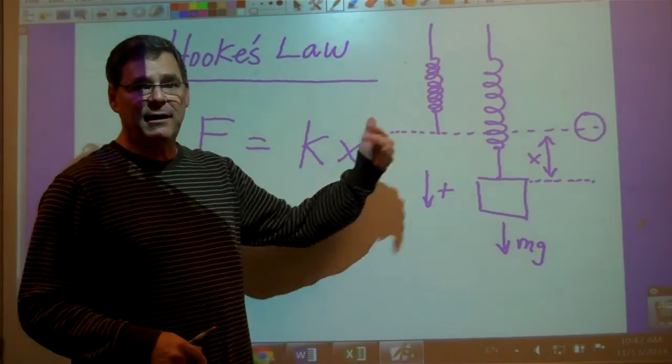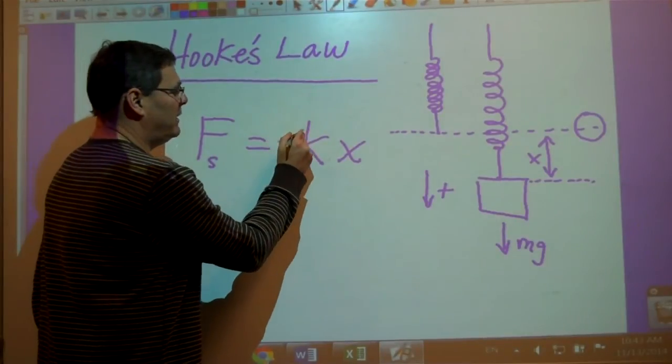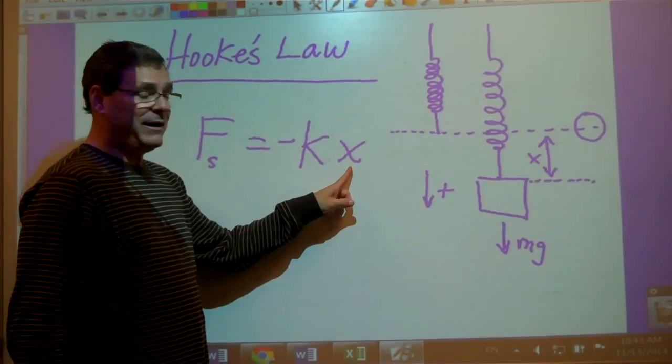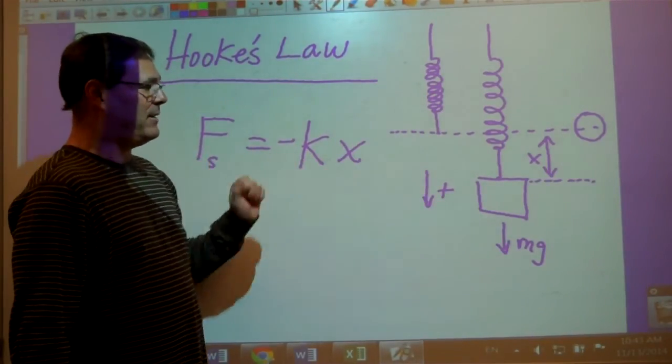The displacement and the force are in opposite directions. So to make the equation complete, we put a negative sign here, which indicates that whichever way the spring is displaced, the force of the spring is opposite of that.